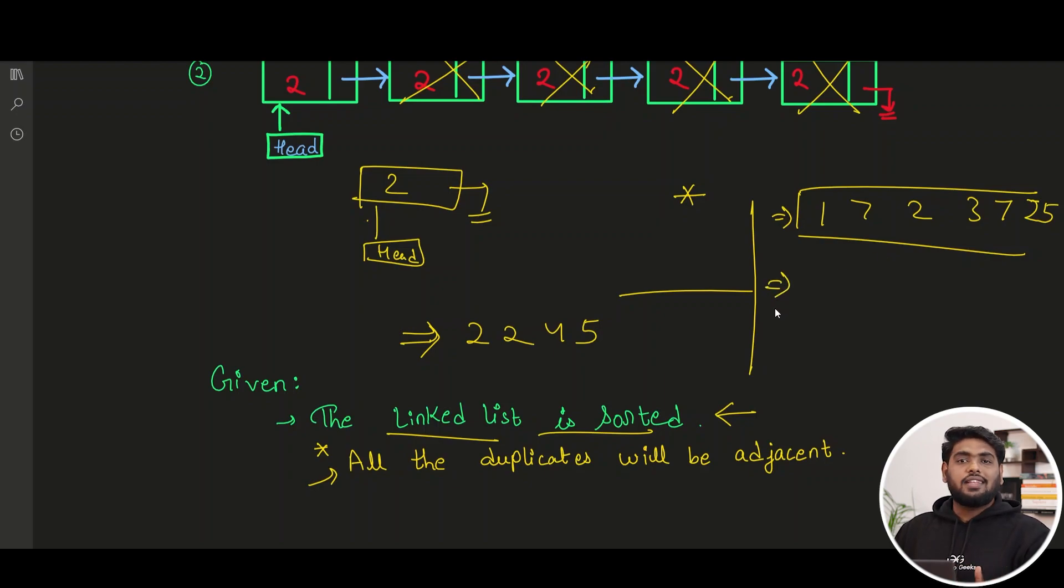So what do we have to do? We have to first think of the linked list as in sorted manner. So if we have it as sorted, this will become like this, correct?